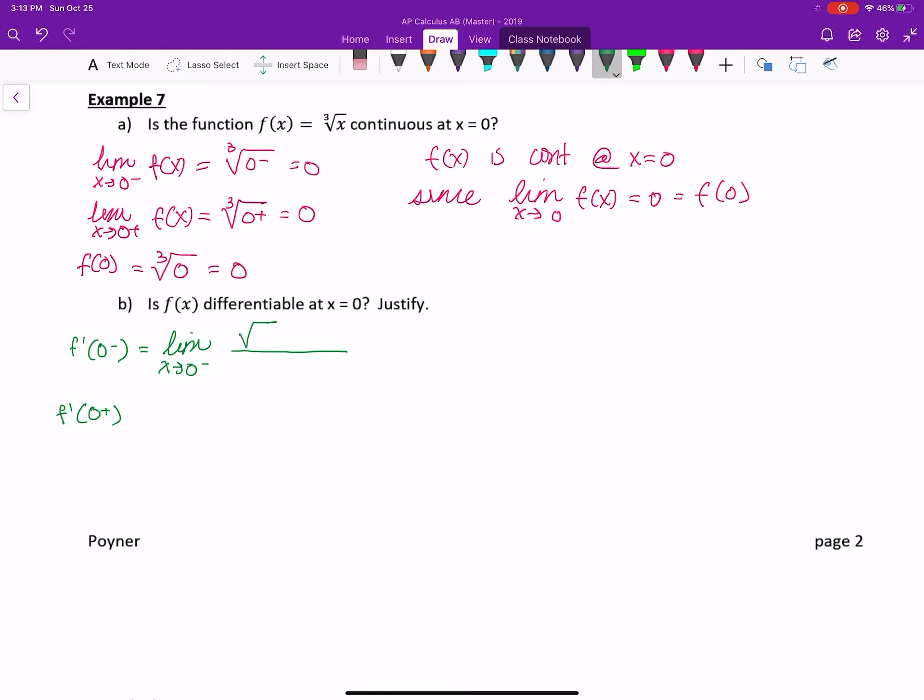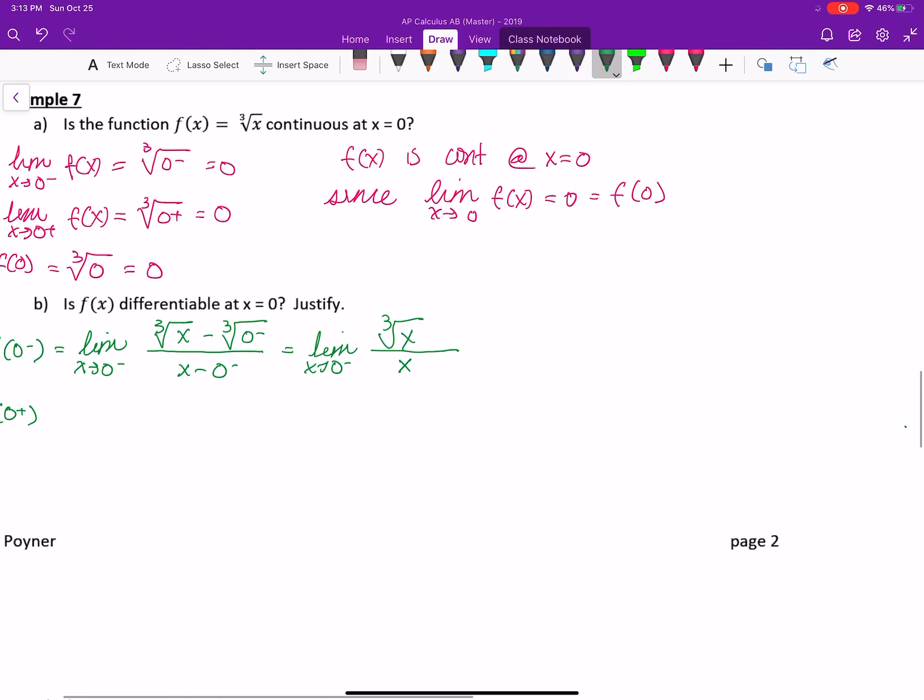I have to use the formula. So here we have the cube root of x minus the cube root of 0, over x minus 0. The limit as x approaches 0 from the right is going to be the cube root of x. The second term in the numerator is just 0. In the denominator, we just get x.